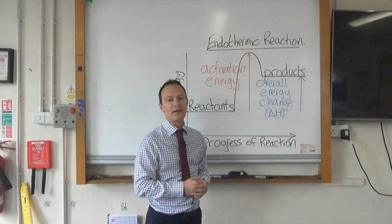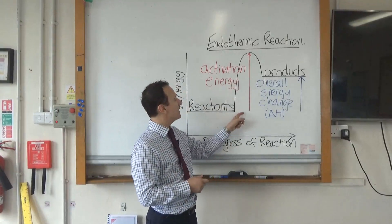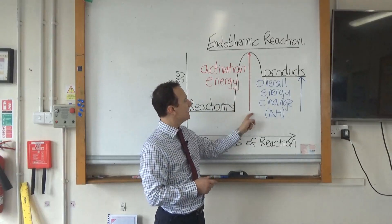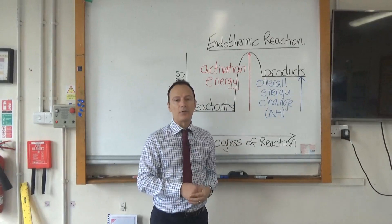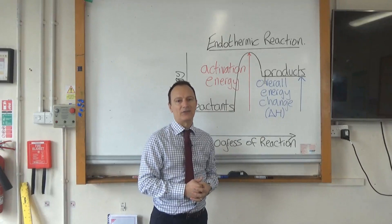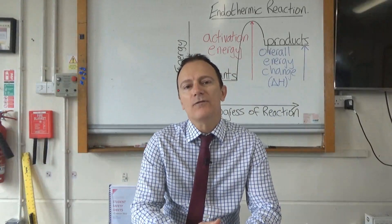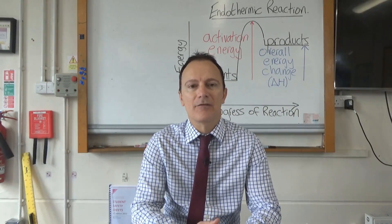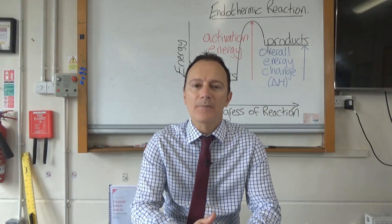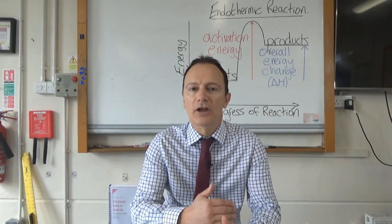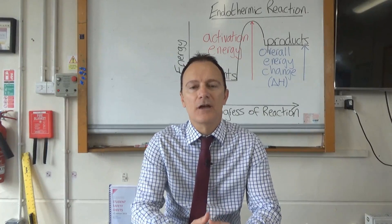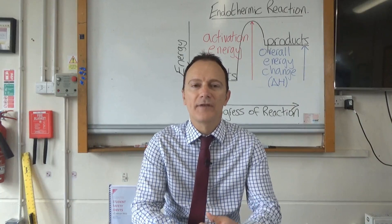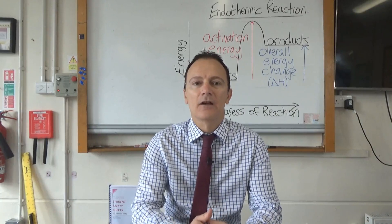Don't forget when labelling these reaction profiles: the activation energy goes from the level of the reactants all the way up to the top, and the overall energy change — delta H — is the difference between the energy level of the reactants and the energy level of the products. It's really important for your exam that you know how to draw and label a reaction profile for both endothermic and exothermic reactions. At this point, get a piece of scrap paper and test yourself — can you draw the correct shape and label the activation energy and the overall energy change? If you can't, re-watch the video and try again until you've got it.